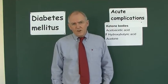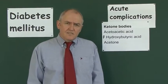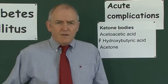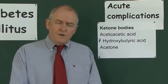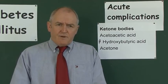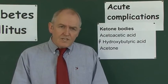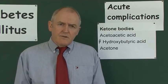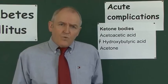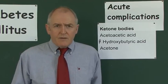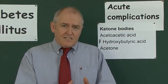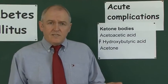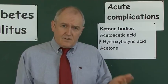Ketone bodies are not a waste product — they are very important metabolic acids. The term 'ketone bodies' actually describes three chemicals: acetoacetic acid, beta-hydroxybutyric acid, and acetone, which is a volatile fraction produced from the beta-hydroxybutyric acid. The acetoacetic acid is what chemists call a ketoacid, and because they're ketoacids, we call them ketones. So that's all 'ketone bodies' means.